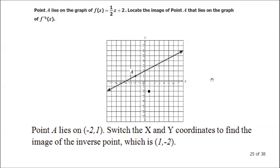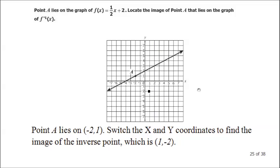With an inverse, we know that coordinates are reversed. So all you need to do is switch the x and y coordinates of point A. Point A is at (negative 2, 1), so the inverse point is (positive 1, negative 2). That's going to be the inverse point.